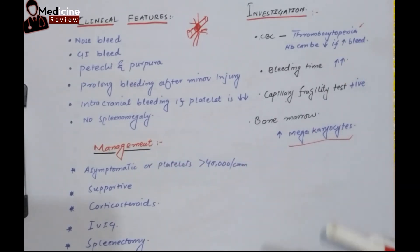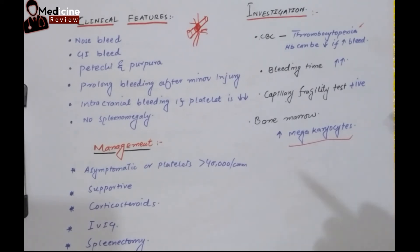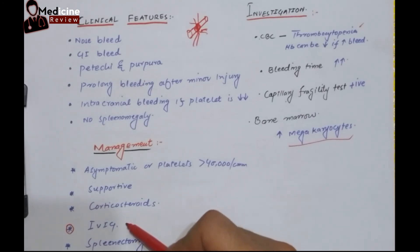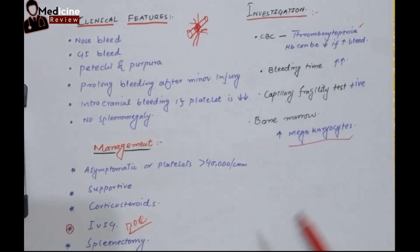For management, in asymptomatic patients or where the platelet count is more than 40,000, no treatment is needed — just observe the patient. Supportive management includes avoiding needle injections and preventing minor injuries, especially in children, as minor injuries can prove lethal. Corticosteroids play a key role in any autoimmune disease. Another treatment is IVIG (intravenous immunoglobulin), which is considered the treatment of choice. IVIG works by providing preformed immunoglobulins that compete with the patient's own IgG antibodies directed against the platelet surface receptors.